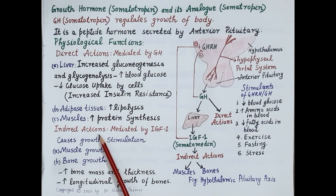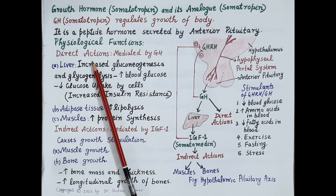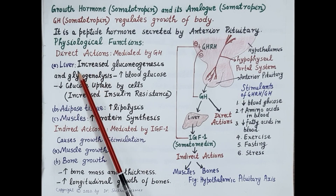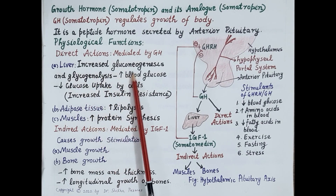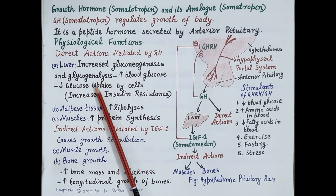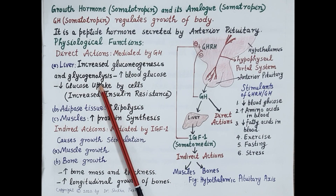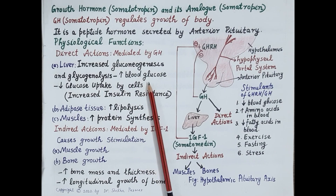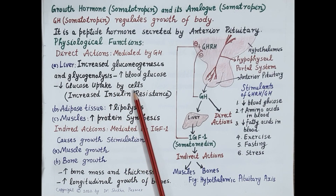Now let's discuss the physiological functions of growth hormone — direct and indirect actions. Growth hormone produces metabolic effects on the liver, adipose tissue, and muscles. On the liver, growth hormone promotes increased gluconeogenesis, that is synthesis of glucose from non-carbohydrate sources like amino acids. It also promotes breakdown of glycogen to glucose, a process called glycogenolysis, which increases blood glucose levels. By increasing gluconeogenesis and glycogenolysis, growth hormone increases blood glucose levels but also reduces uptake of glucose by body cells.